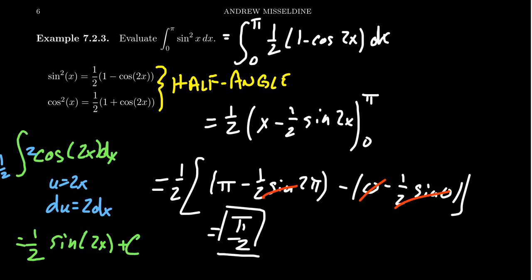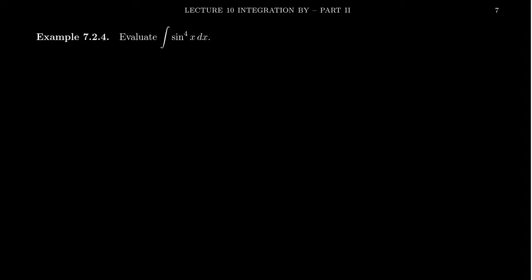So I just want to illustrate this example that if you only have an even number of sines or cosines, that's okay, use half-angle identities. If one of the powers is odd, you can use the Pythagorean identity. Let's take another example.